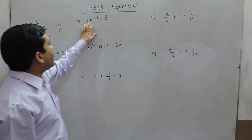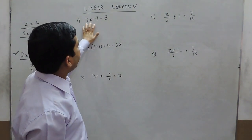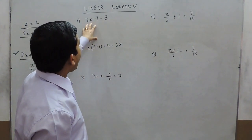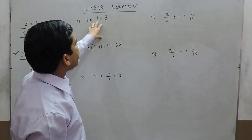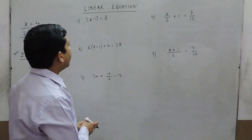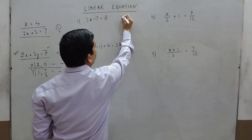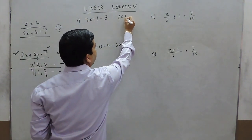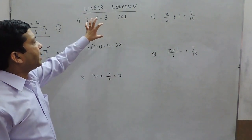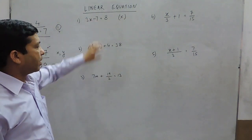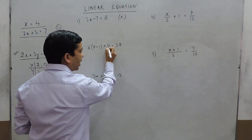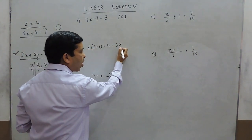For example, 3x minus 7 equals 8 — we look at how many variables are being used. In this equation we are using only one variable, which is x. So this is a linear equation in one variable.